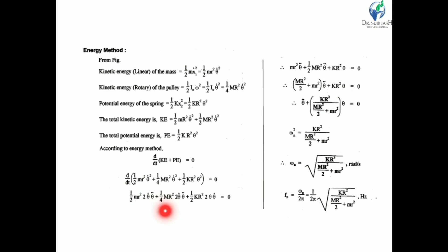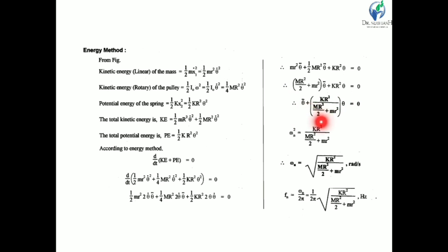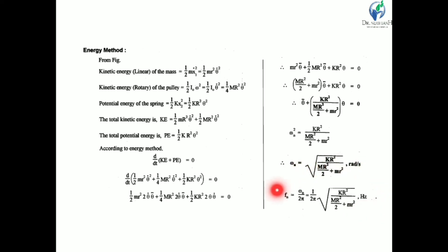Simplifying, we get: theta-double-dot + [KR² / (MR²/2 + mr²)]·theta = 0. Comparing with simple harmonic motion, omega_n² = KR² / (MR²/2 + mr²), and omega_n = √[KR² / (MR²/2 + mr²)]. Therefore, natural frequency f_n = (1/2π)·√[KR² / (MR²/2 + mr²)] Hz. Thank you.